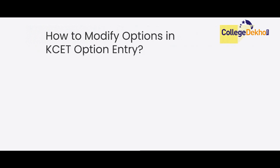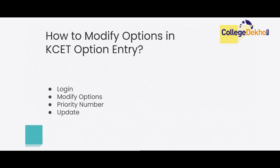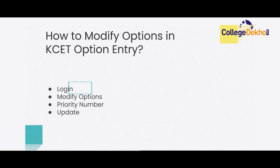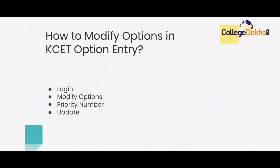Now, how to modify options. In KSET option entry, you will be allowed to modify your choices as per the specified dates. To modify options, log in again to the official website using your CET number, then click on the link that says 'Modify Selected Option.' You will see all the colleges and courses that you had selected previously, and you can change the priority numbers or add new colleges or courses to the list. After you are done and have cross-checked the options, click on 'Update Option' and it will be updated.